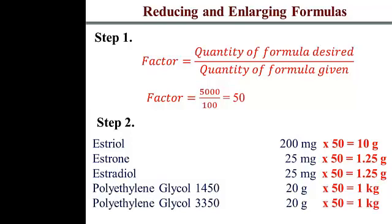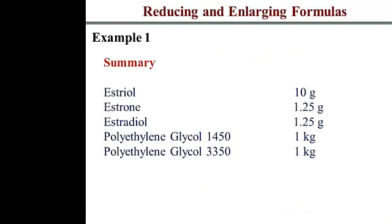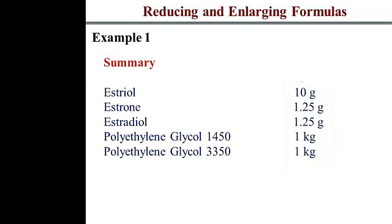Similarly, polyethylene glycol 3350: multiply the 20 grams by 50, giving 1,000 grams, which is 1 kilogram. So in summary, whereas you needed 200 milligrams of estradiol for your formula, for the quantity you are compounding you will need 10 grams. These are the exact amounts of each ingredient needed to prepare 5,000 capsules — a lot more than your formula stipulates. That's how you use the steps, and it's really easy.